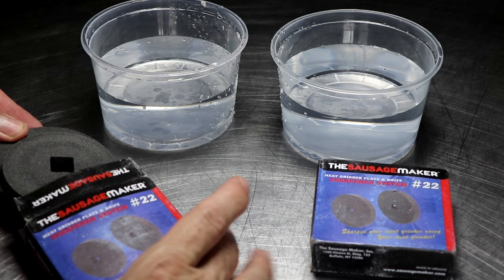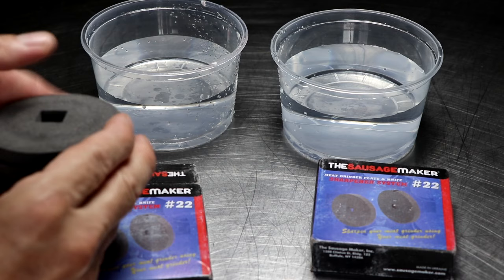The issue that you're going to typically run into when it comes to meat grinders is that your knife is eventually going to get dull and your plate's eventually going to get dull, and that's going to affect the quality of your grind. If you care about that, then you're going to eventually have to either replace the knife and the plate or figure out some way to sharpen it.